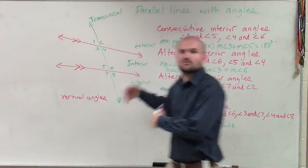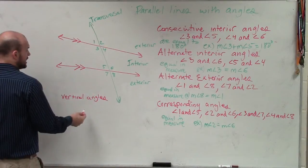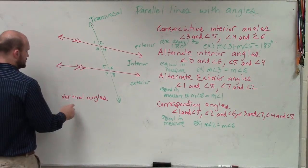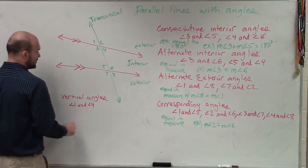So just to kind of throw it in with our notes, we know that vertical angles are across from each other. Remember, they share a vertex and don't share any sides. So you could say angle 1 and angle 4 are vertical angles.